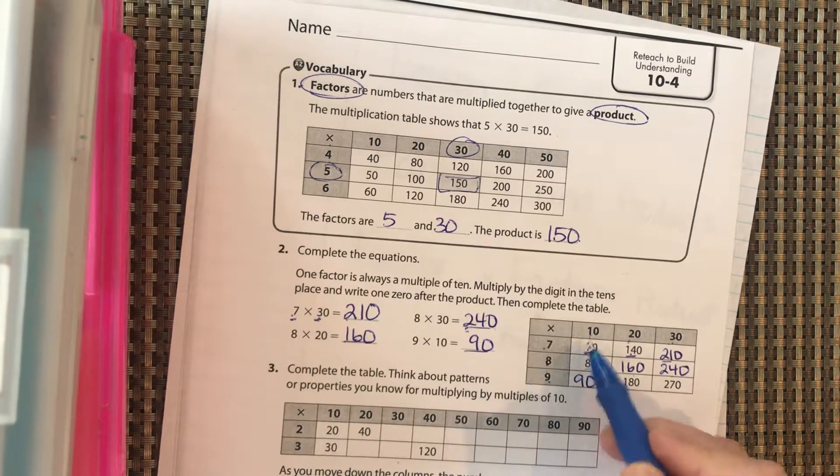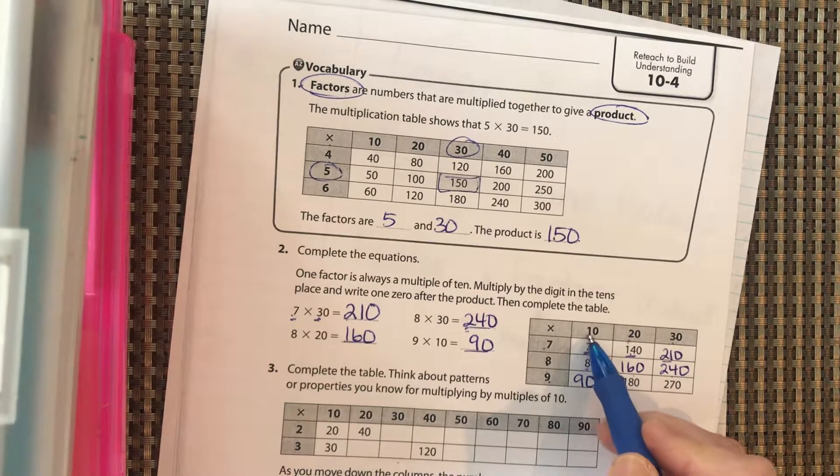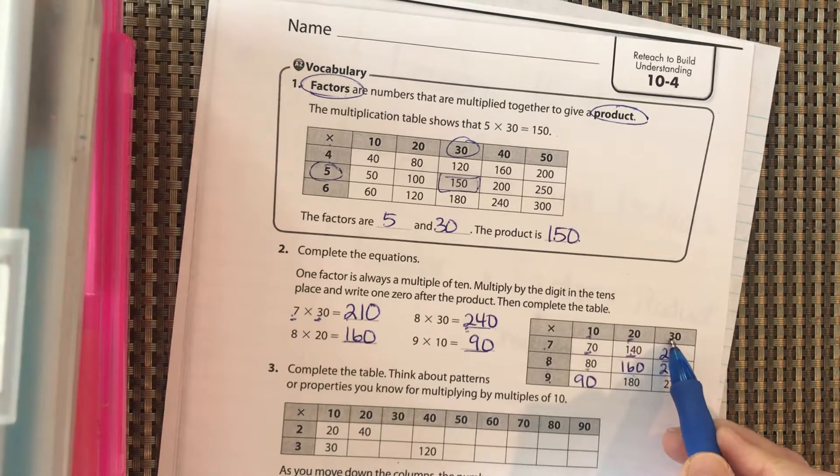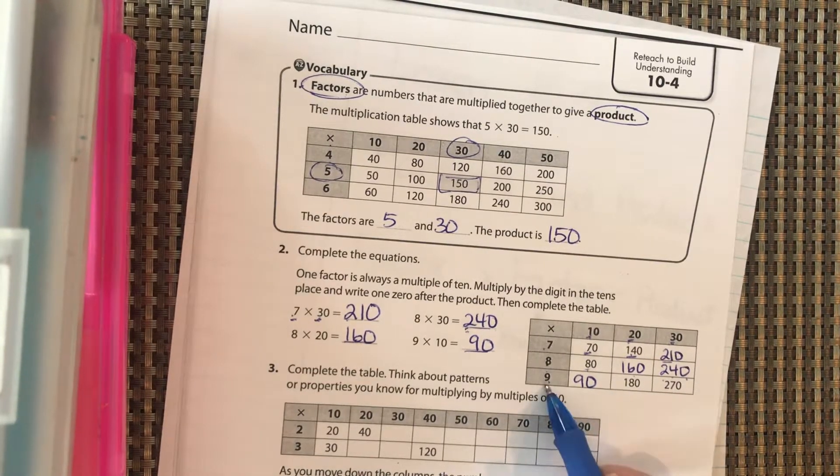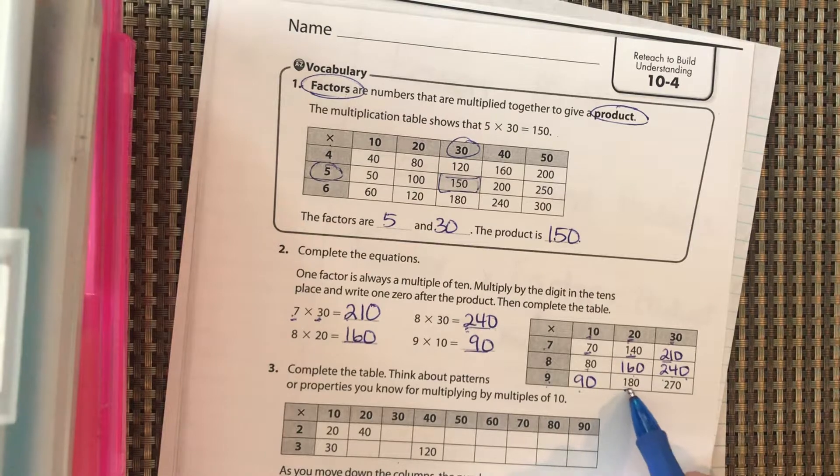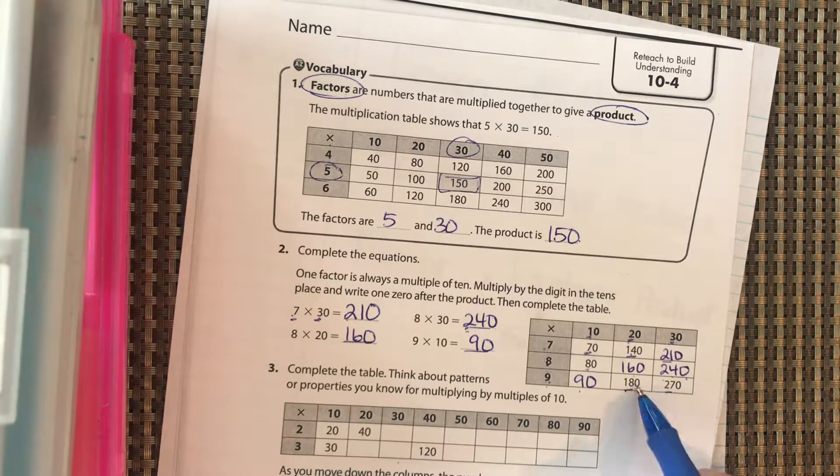These are multiples of eight: eight, 16, 24. Well, you have eight times one, eight times two, eight times three, with the zero after it. Same with the nine: nine times one is nine, nine times two is 18, nine times three is 27. We're just putting a zero after it.